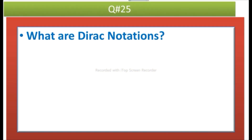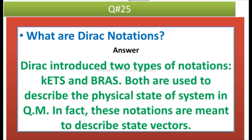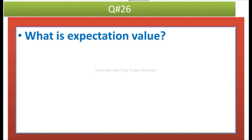The next question is: what are Dirac notations? Answer: Dirac introduced two types of notations — Kets and Bras — both are used to describe the physical state of a system in quantum mechanics. In fact, these notations are meant to describe state vectors.